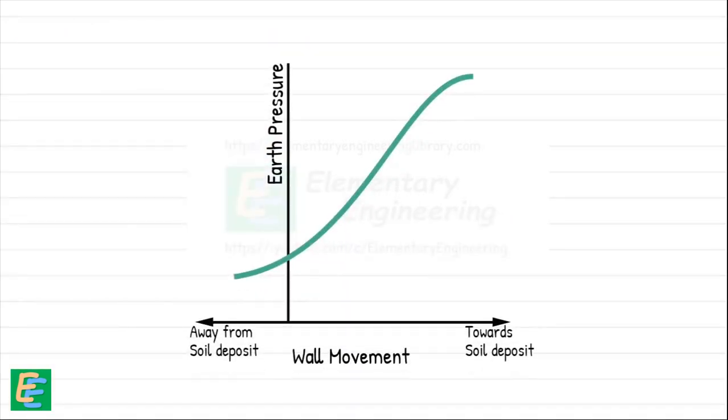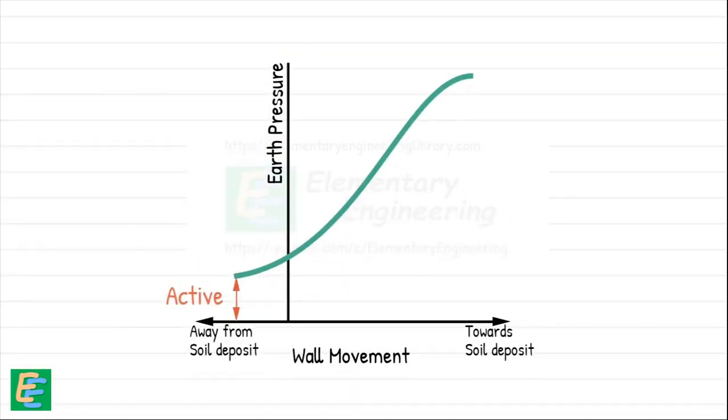So in simple terms, active earth pressure is a minimum lateral pressure a wall can experience, while the passive earth pressure is the maximum. In both the cases, the soil is at the point of failure, either because of its expanding and breaking apart, or getting compressed to its limit.